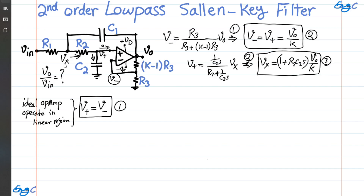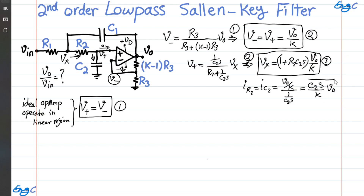Now I have Vx as a function of Vout. The current through R2 and C2, which are effectively in series, is I_R2 = I_C2 = V-positive divided by the impedance of the cap, which is 1/C2s. So using equation two, this is C2s divided by K, times Vout. Let's keep this as equation number four. Now at node Vx, I can write one KCL: the current from Vin into Vx, which is (Vin minus Vx) divided by R1, equals the current through R2 — which is C2s over K times Vout — plus the current through C1, which is (Vx minus Vout) divided by 1/C1s.